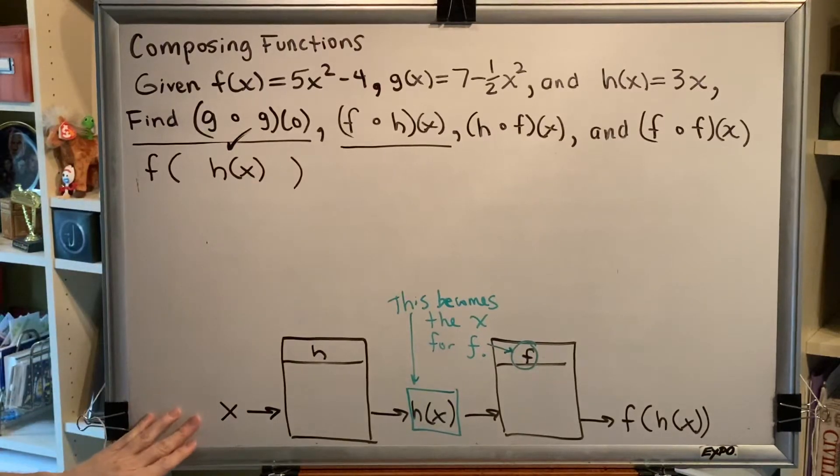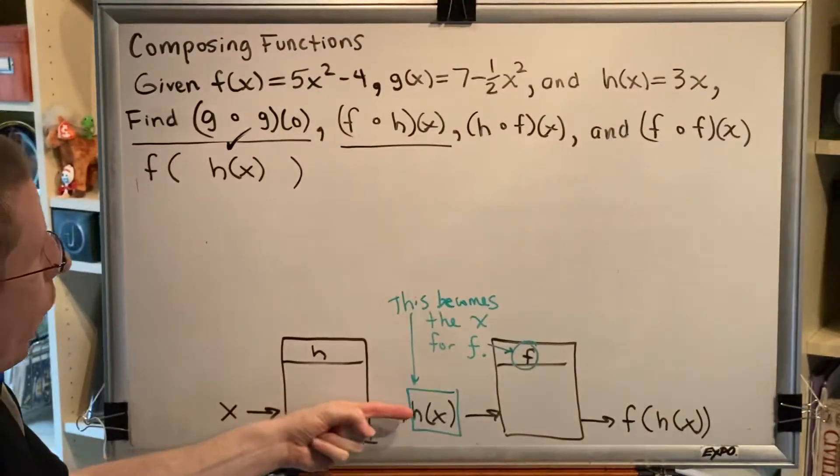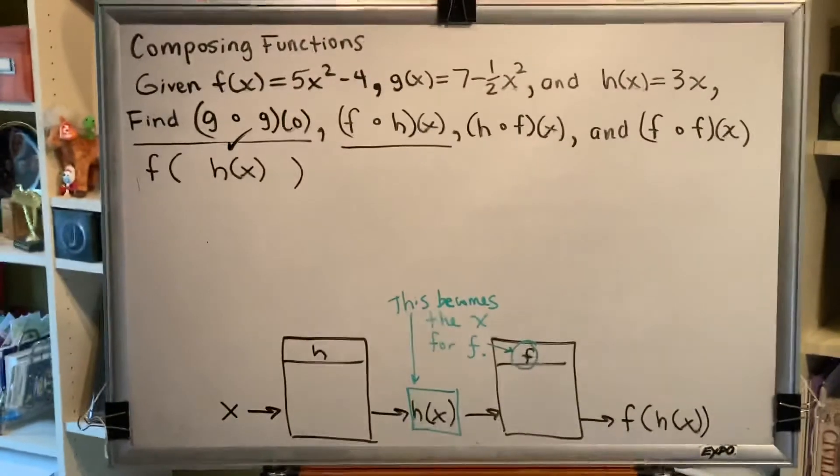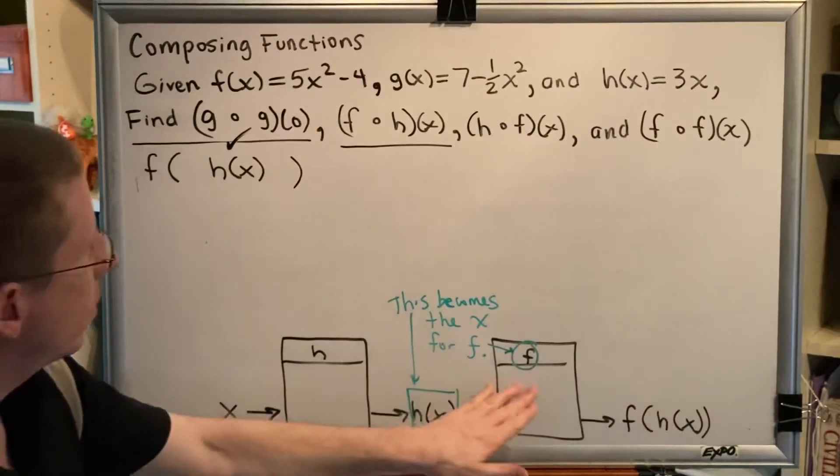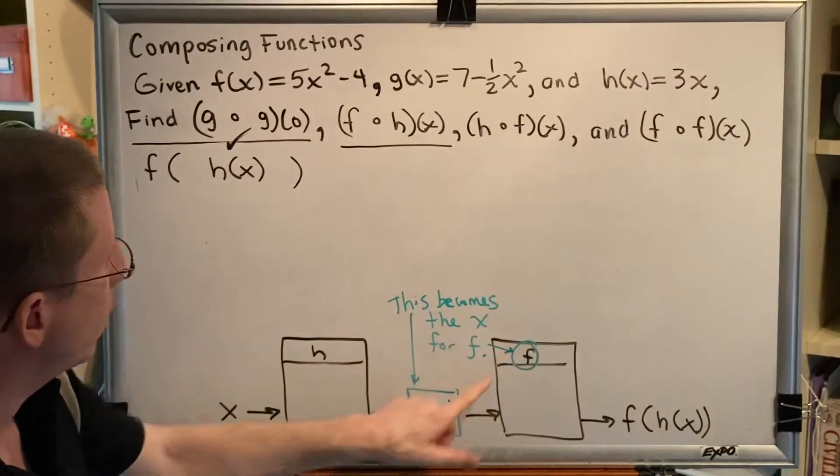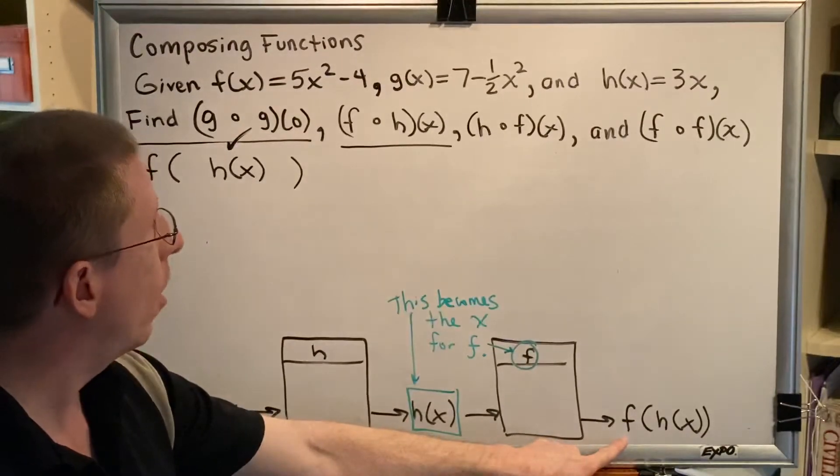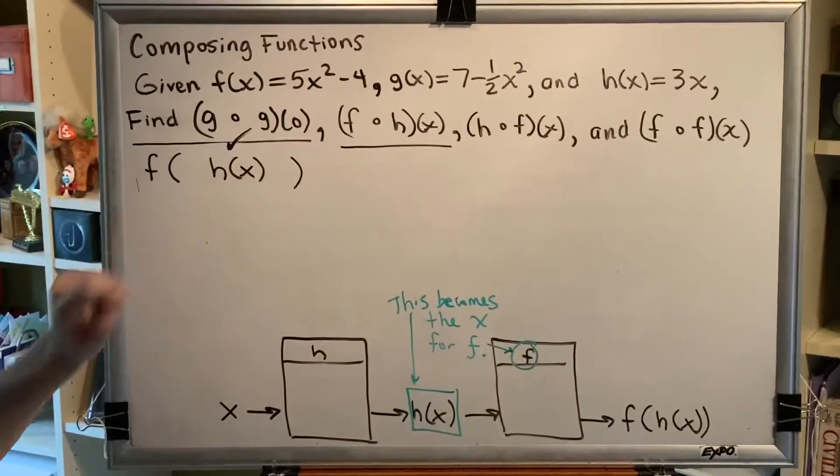So let's just briefly look at a diagram we saw in a previous video. Composing two functions together is like putting two functions side by side, where the output of the first becomes the input for the second. Notice that by putting these functions in this order with the h first and the f second, the output that I get is f, which is what we need to find in this problem.